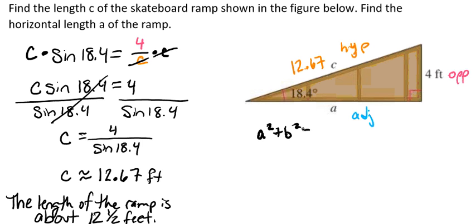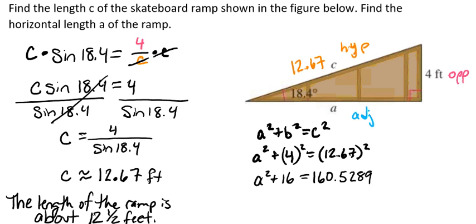So we're going to use a squared plus b squared equals c squared. So we don't know what a is, that's what we're looking for, so a squared plus 4 squared equals 12.67 squared, which gives us a squared plus 16 equals 160.5289.